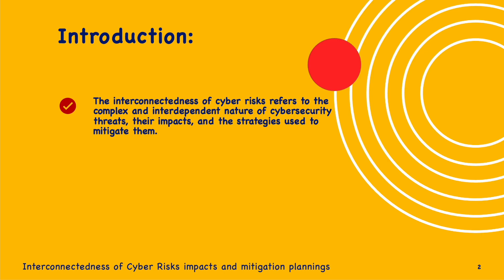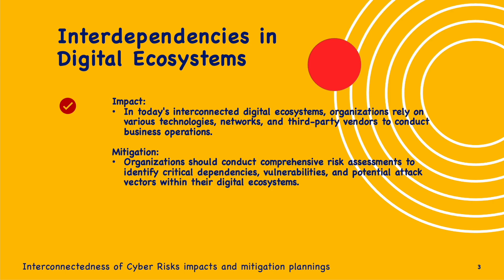First is interdependencies in the digital ecosystem. In today's interconnected digital ecosystems, organizations rely on various technologies, networks, and third-party vendors to conduct business operations. Technologies include ERP, CRM, collaboration tools like Microsoft Teams, Slack, and Zoom, business intelligence systems, and server solutions such as antivirus software and IDPS for server threats. Networks include LANs, WANs, and VPNs.